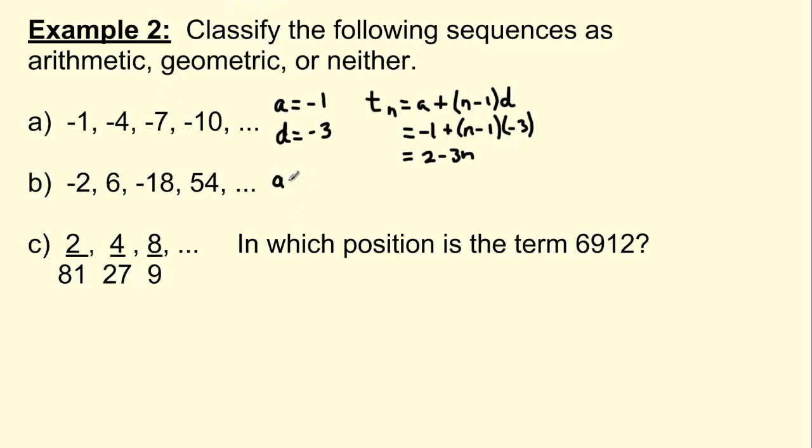The a value is negative 2. The r value, or my common ratio, is equal to negative 3. So my general term, remember, is a times r to the exponent n minus 1, or negative 2 times negative 3 to the exponent n minus 1. This first number here, I guess doesn't need the brackets. So I can write this as negative 2 times negative 3 to the n minus 1. Both are the same.